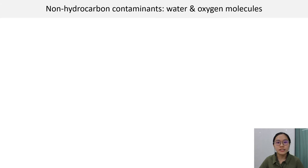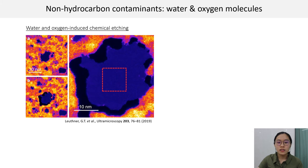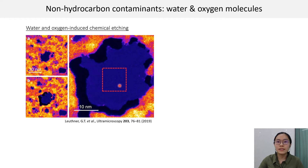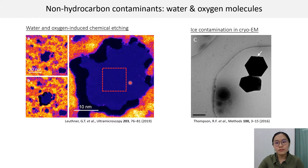We also need to concern ourselves with non-hydrocarbon contaminants such as water and oxygen molecules. Lunner et al. provided images here showing that radicals derived from water and oxygen molecules can cause lattice damage by chemically etching the specimen, as shown by the dark region here surrounding blue-coloured pristine lattice. This process is often mistaken as knock-on damage, when it is actually a chemically-assisted process. In cryo-electron microscopy, we have excessive moisture that can form crystalline ice and diffract electrons, which also compromises the structural integrity of our specimen.